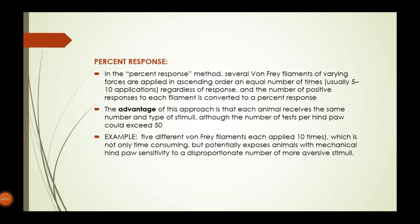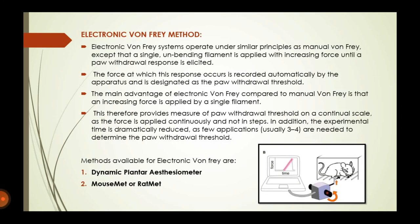In the percent response method, Von Frey filaments of varying forces are applied in ascending order, with a maximum of 5 to 10 applications per filament. The number of positive responses to each filament is converted to a percent response. The advantage is that each animal receives the same number and type of stimuli, although the number of tests per hind paw could exceed 50.